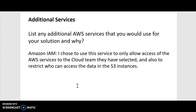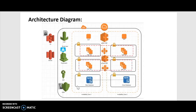For additional services, I chose to also use Amazon IAM. I chose this because it allows access for AWS services to the cloud team — because they only wanted the cloud team to be able to access it — and also to restrict those who can access the S3 instances. And this is my architecture diagram.